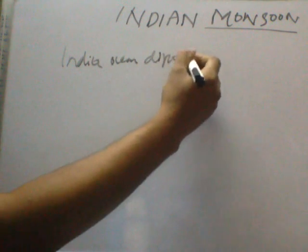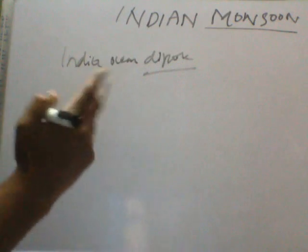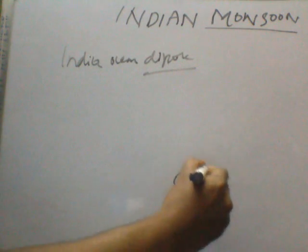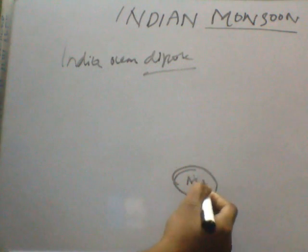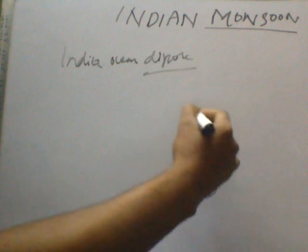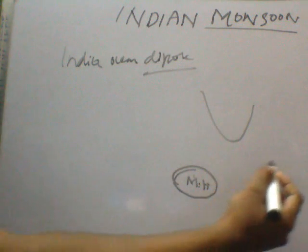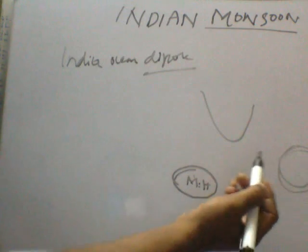The Indian Ocean Dipole — the word 'dipole' itself means two poles. One pole is the Mascarene High in the Indian Ocean, and the other involves warmer water. This can counteract the negative effects of El Niño on the Indian monsoon.